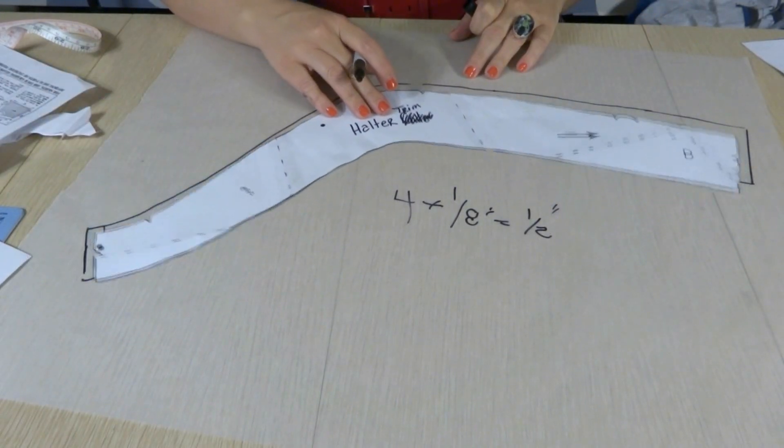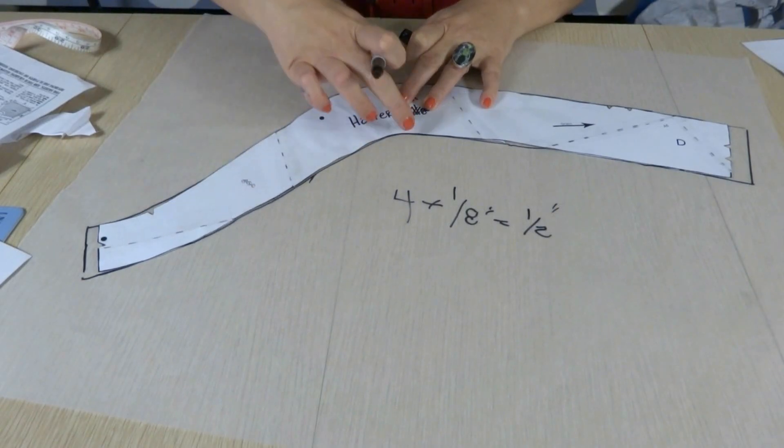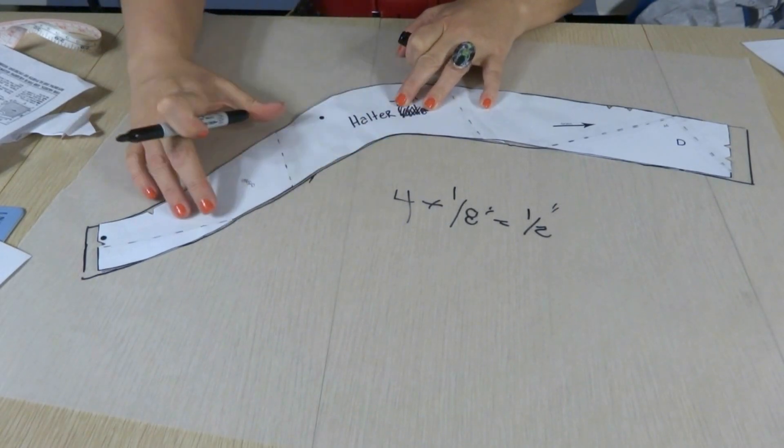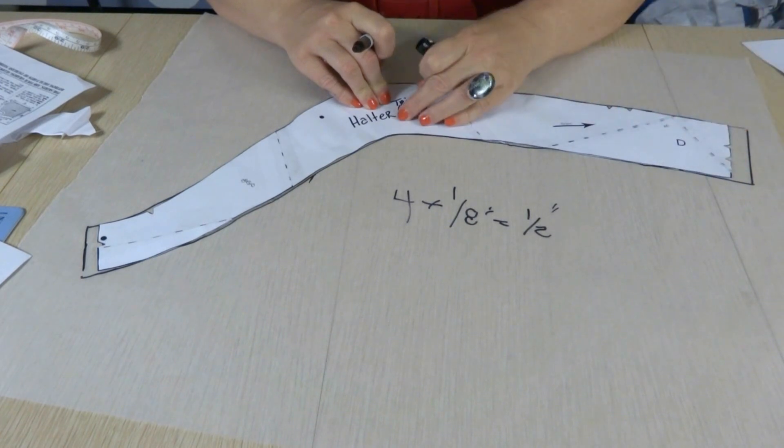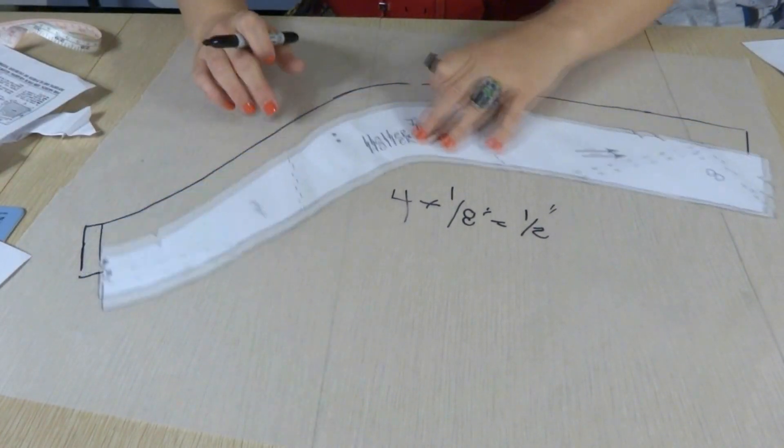Now, the trick on this is when you're tracing it, you want to make sure that you're tracing this curved section while you're still on the original center. Once you've got that drawn, go ahead and shift it down to finish off the line there.